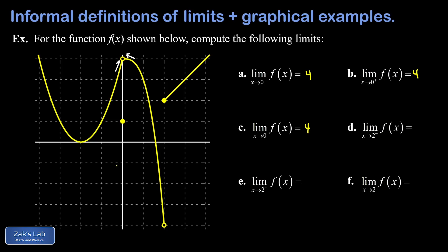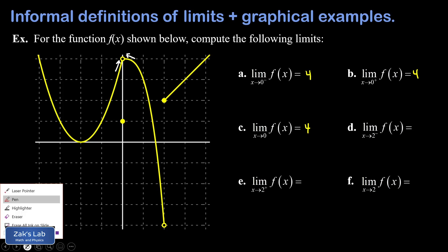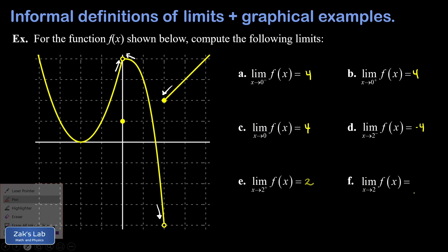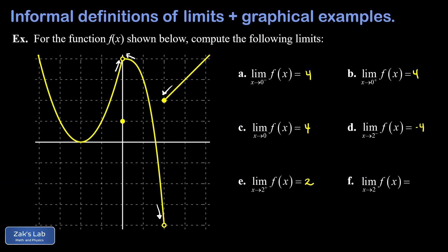Moving on to limits around x equals 2: the limit as x goes to 2 from the left puts us on a branch that's steeply diving down, with y-values getting very close to negative 4. So that left-sided limit is −4. The limit as x goes to 2 from the right puts us on the rightmost branch, where f(x) gets very close to 2. The left and right limits don't agree, which relates to a jump discontinuity.